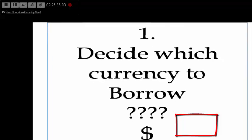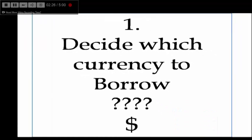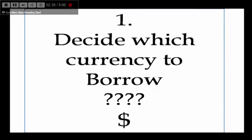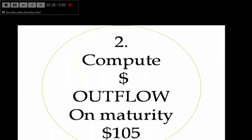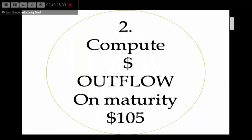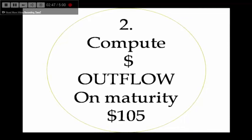Step 1: Decide which currency to borrow. We borrow at the low rate and invest at the high rate — borrowing dollars at 5% and investing in rupees at 10%. Step 2: Calculate the dollar outflow on maturity. $100 plus interest at 5% equals $105.